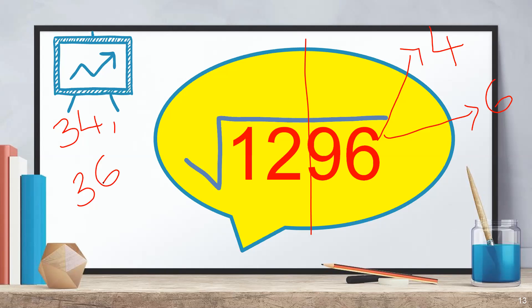3 × 4 = 12, which is exactly equal to the first pair 12 — not less, not greater, but equal. This means 1296 is an exception for this method. The technique cannot be used here, and there is no other shortcut available. You just have to memorize that √1296 = 36, or use the normal long-division method of finding square roots that you've studied in class.